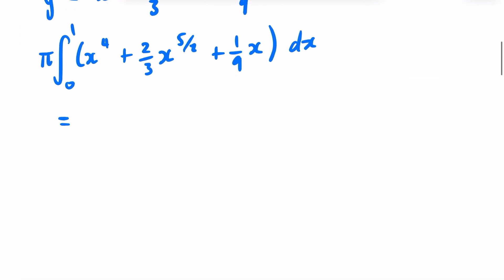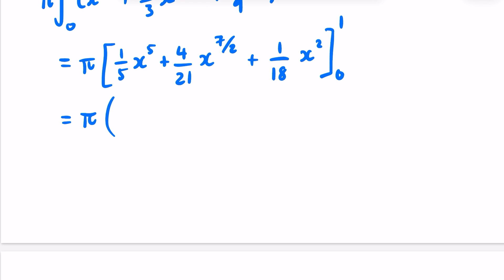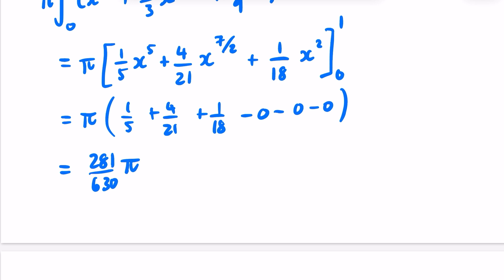Integrating and keeping π, we get x⁵/5 + (4/21)x^(7/2) + (1/18)x², with limits 0 to 1. When I substitute in 1, I get 1/5 + 4/21 + 1/18. When I substitute in 0, those all end up as zero. So 1/5 + 4/21 + 1/18 gives us 281/630. So the volume of the first section is 281/630 π.